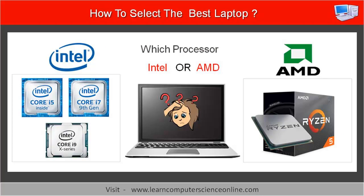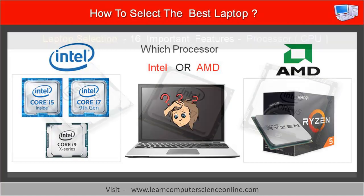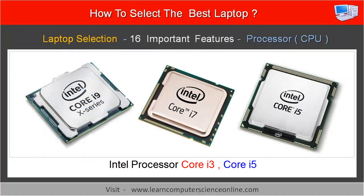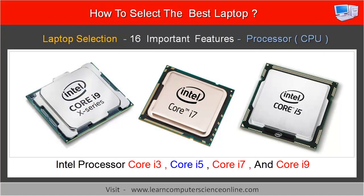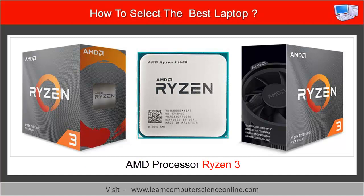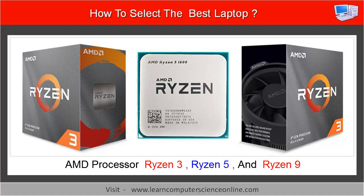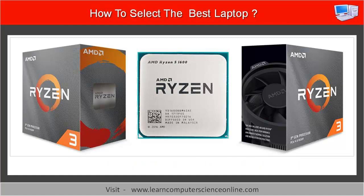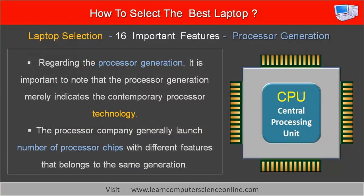The processor generation is another important feature of the CPU that highlights the contemporary technology used in the processor chip. For example, Intel Core i3, i5, i7, and i9 is the latest generation of processors currently available in the market. Similarly, the AMD CPU generations include Ryzen 3, Ryzen 5, and Ryzen 9, which are the current generation of AMD processors. Regarding the processor generation, it is important to note that it merely indicates the contemporary processor technology, and processor companies generally launch a number of processor chips with different features belonging to the same generation.